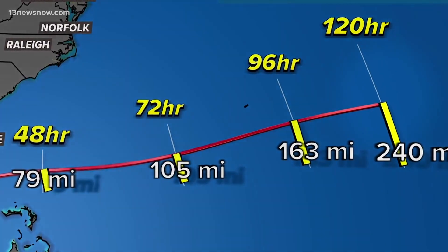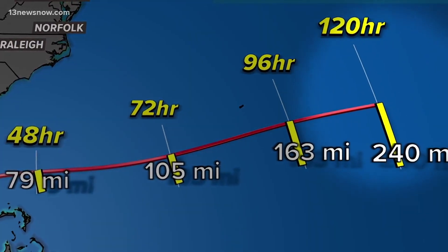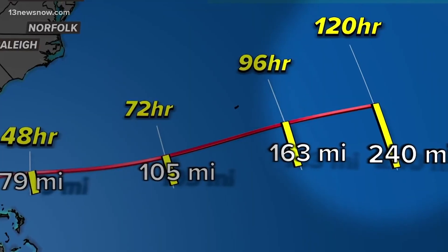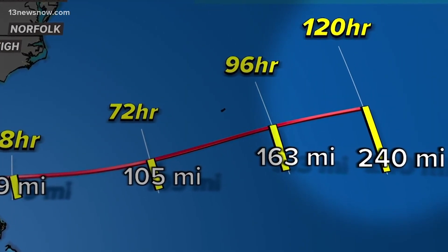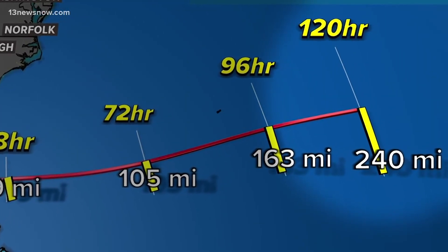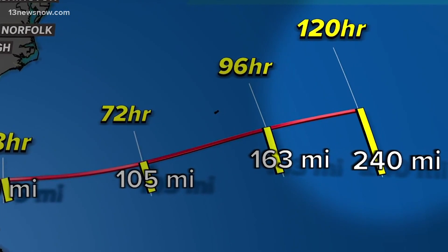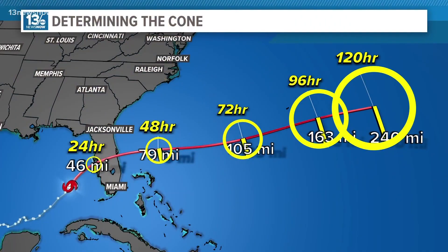By the time you get to 120 hours, or five days out, the circle of uncertainty expands to about 240 miles. You simply add up those forecast circles and you get the cone — the area that represents where the center of the storm could be over the coming days, making visible the uncertainty.